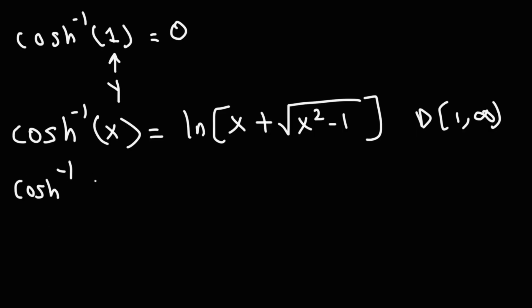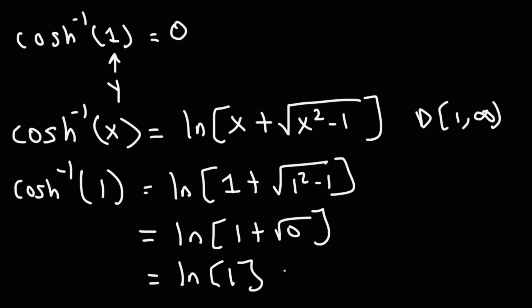Let's evaluate the inverse hyperbolic cosine function of 1. Actually, this should be a 1, not a 0. All we have to do is replace x with 1. 1 squared minus 1 is 0. The square root of 0 is 0. Plus 1, we get 1. The natural log of 1 is 0. So that's how we can confirm our answer, simply using that formula.